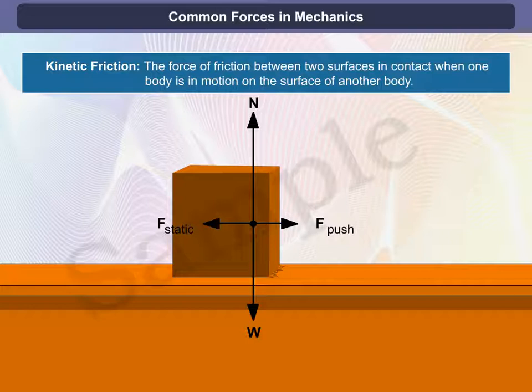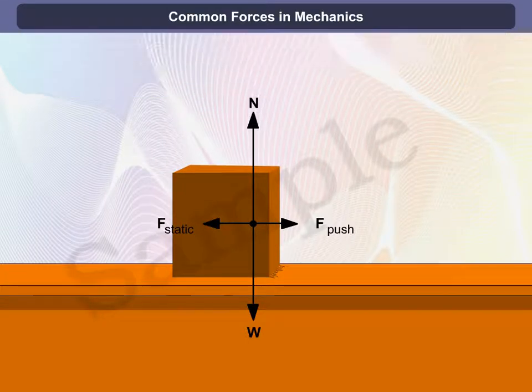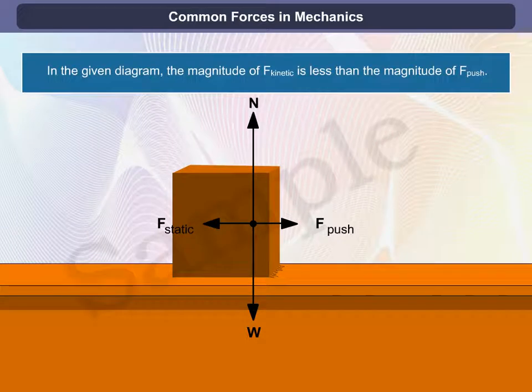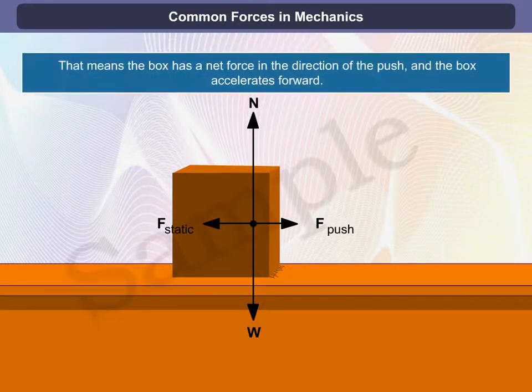The force of friction between two surfaces in contact when one body is in motion to the surface of another body is called kinetic friction. In the given diagram, the magnitude of F kinetic is less than the magnitude of F push. That means the box has a net force in the direction of the push and the box accelerates forward.